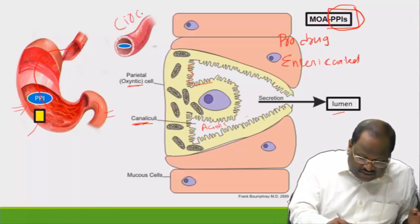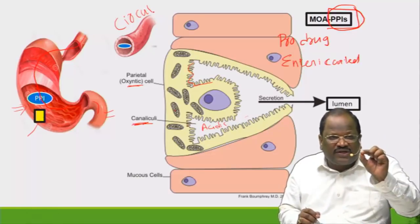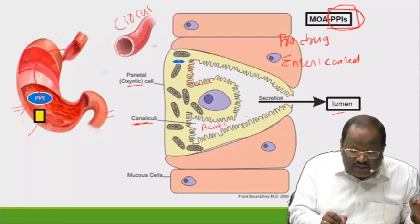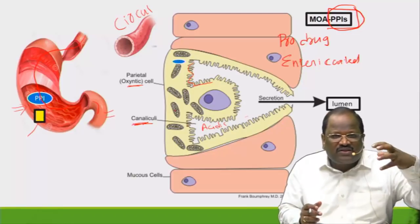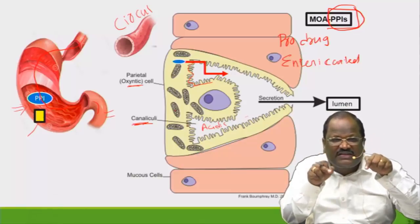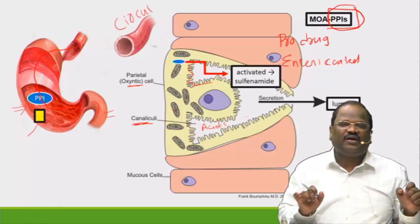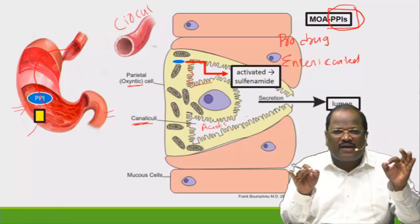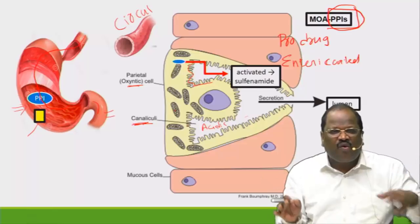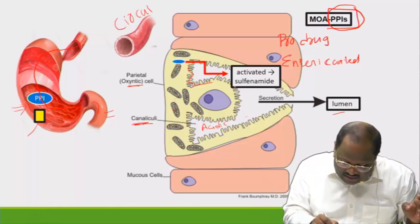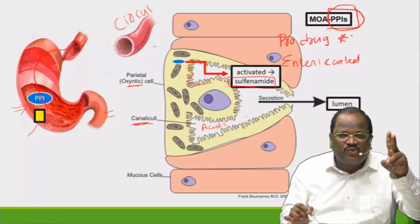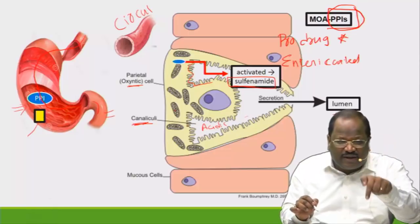From circulation, the proton pump blocker — for example omeprazole — enters the parietal cell and then enters the acid canaliculi. MCQ point: the drug gets activated in the acid canaliculi. So the answer is: proton pump blockers are activated in acidic medium. The active form is sulfenamide.